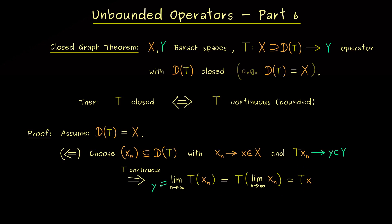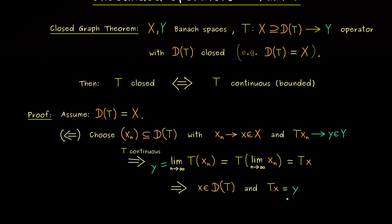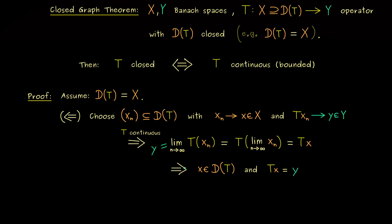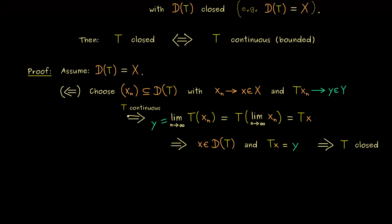So what we have is that T of x is equal to y and it holds for all sequences with this assumption here. So more precisely we have exactly this implication here and this means that the operator T is closed. But of course we already knew that this direction here is not the hard one. Therefore, now let's think how we can prove that a closed operator is also bounded.